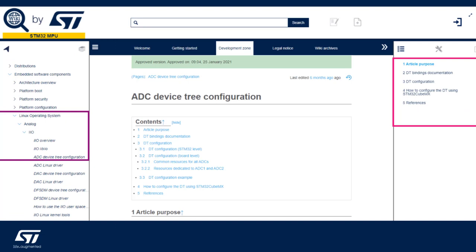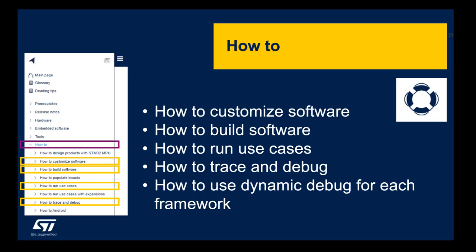Here is an example of a Wiki page for the ADC Linux component from the IIO Linux framework. It shows the device tree configuration for this component. A how-to section is available covering: how to customize the software, how to build the software, how to run use cases with command lines to execute — for instance with GStreamer — how to debug and trace information, and how to use dynamic debug for each framework.